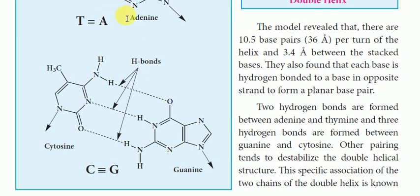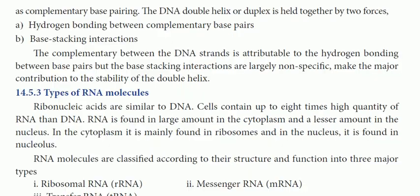Two hydrogen bonds are formed between adenine and thymine, and three hydrogen bonds are formed between guanine and cytosine. So adenine-thymine gives two hydrogen bonds, and guanine-cytosine gives three hydrogen bonds. This pairing can destabilize the double helical structure if disrupted. There is a specific association of two chains of the double helix, known as complementary base pairing.